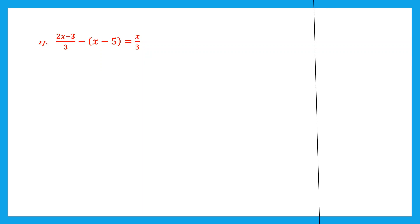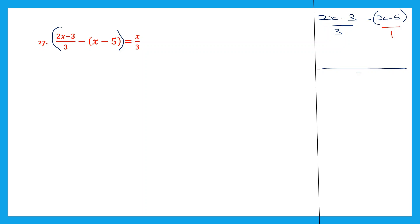Question 27. So let's work out what's on the left hand side first. We have 2x minus 3 by 3, minus x minus 5. So this is minus x minus 5, let me put it in brackets. Now let's give this the denominator 1. Since we have like fractions we have to find the LCM. The LCM of 3 and 1 will be 3. Now 3 into 1 is 3, so we multiply this also by 1.